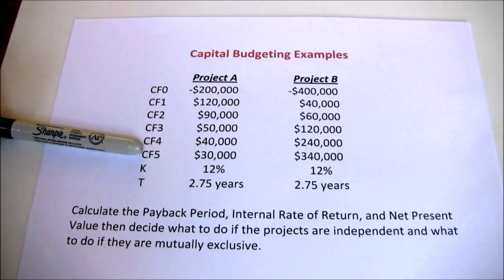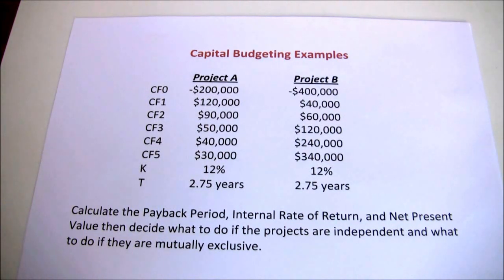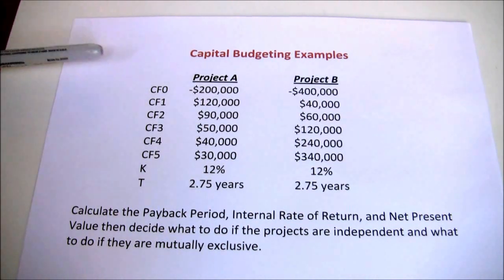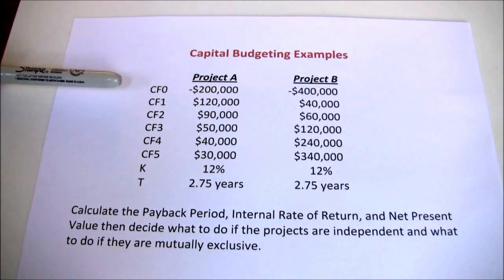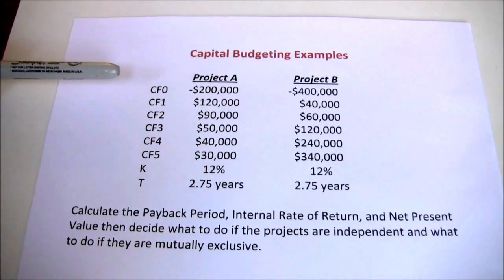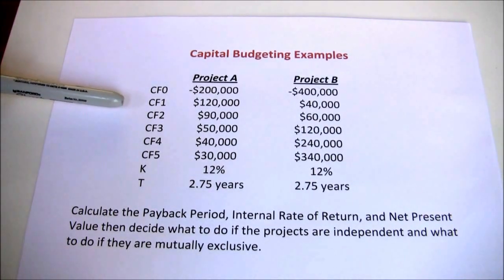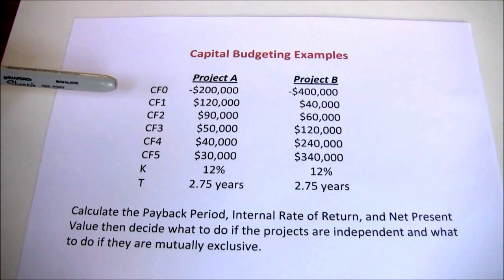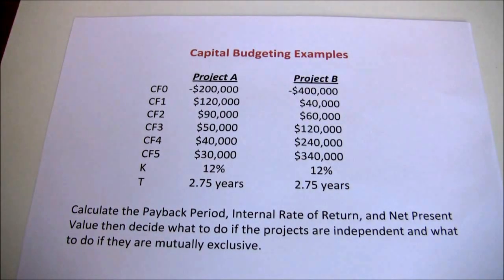Now we're going to be calculating our internal rate of return. Internal rate of return is the average annualized expected rate of return over the five-year time period on our $200,000 initial investment. In reality this is not something new — it's something we introduced back in our Time Value of Money chapter when we solved for the interest rate on an uneven cash flow stream.